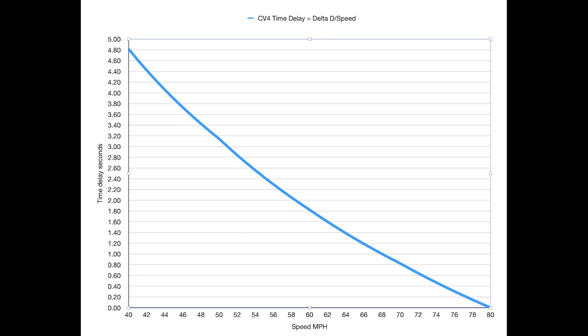Here's a graph showing the time delay before asymmetric DCC is switched on. You can see that at 40 miles an hour the delay is 4.8 seconds, at 60 miles an hour the delay is 1.8 seconds, and at 80 miles an hour there's no delay at all.